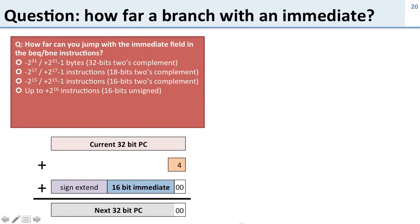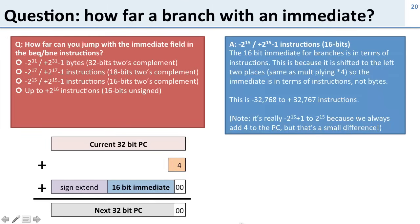How far can you jump with the immediate field in branch equal or branch not equal? The range is approximately −2^15 to +2^15 − 1 instructions. It's expressed in instructions rather than bytes because we shift the immediate left by two bits. The +4 added each time slightly adjusts the range, but it's a small difference in the overall reach.